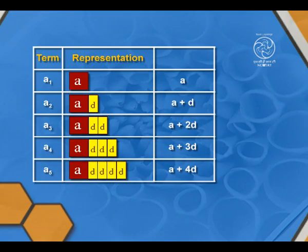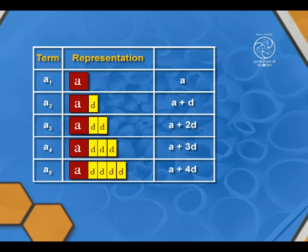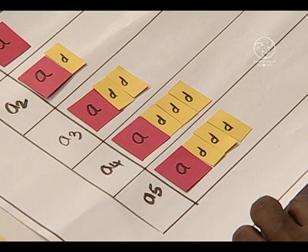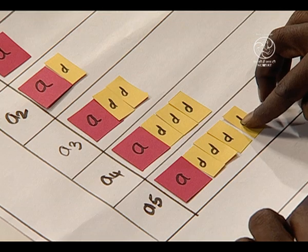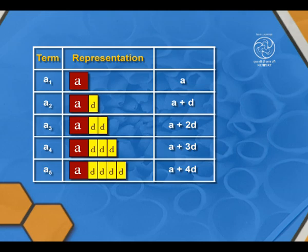Now we find the fifth term. Fifth term means adding D to the fourth term. The fourth term is A plus 3D and adding one more D. So this is A plus 4D.